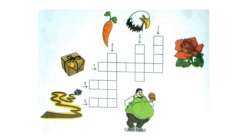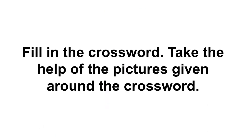Here you can see a crossword puzzle. You can see cells arranged across and downwards direction. And you can also see clues for each word to be filled across and downwards. So, let's start solving the puzzle. Fill in the crossword. Take the help of the pictures given around the crossword.